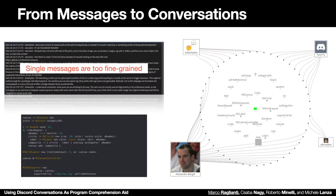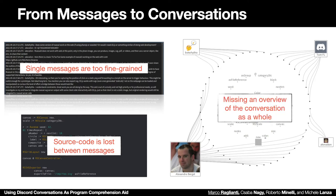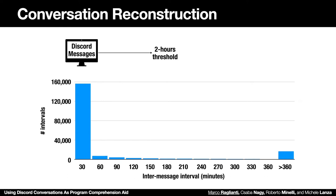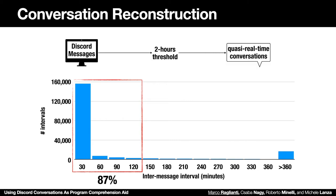Single messages are too fine-grained and source code is lost between them. In the end, we're missing an overview of the conversation as a whole. In order to promote conversations to first-class citizens, we propose to reconstruct conversations starting from Discord messages and applying a two-hour threshold. With this threshold we retain 87% of inter-message time intervals, and in the end we obtain what we call quasi-real-time conversations.